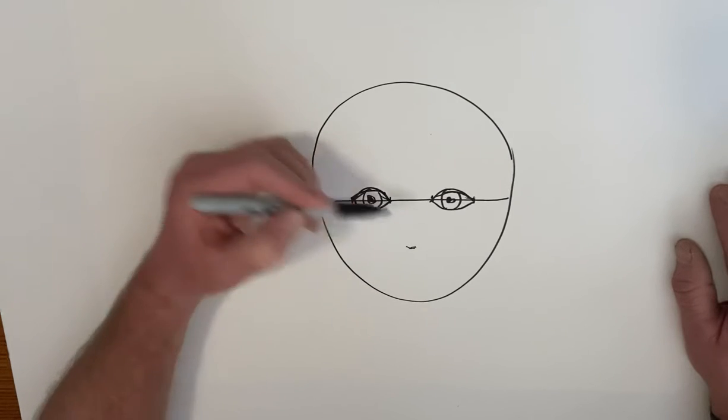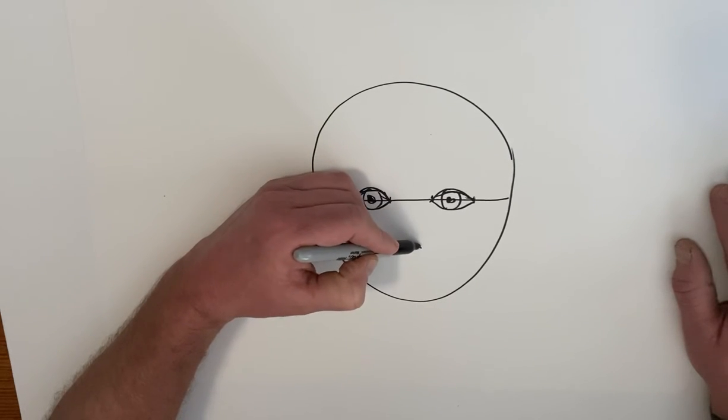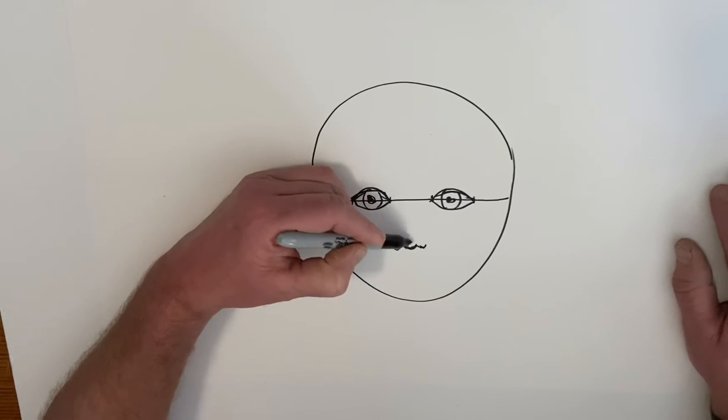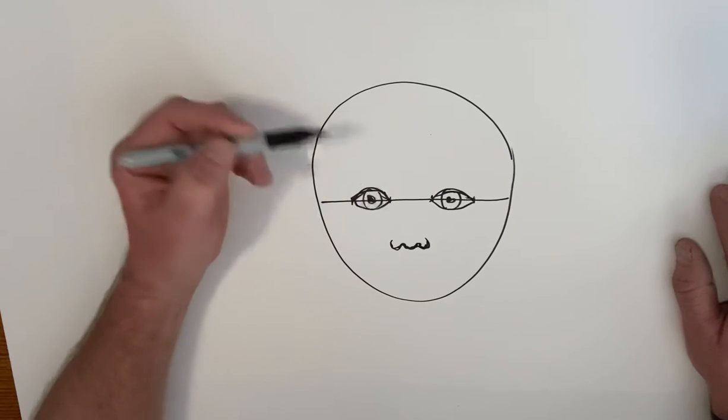When I draw the nose, I usually draw the line across the bottom of the nose, the pathway from one nostril across to the other side.